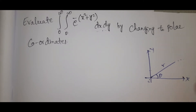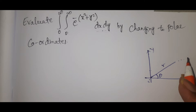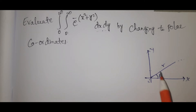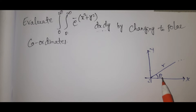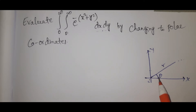If we change into polar coordinates, we can do this. Only the x-y plane, not z here. x equal to r cos theta, y equal to r sin theta. Only two variables, two axes.